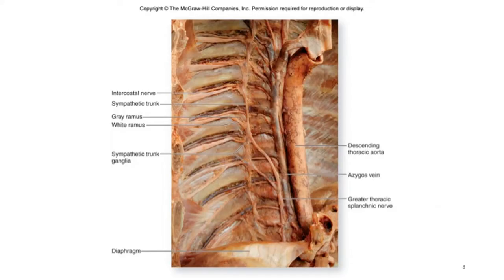This is a prosected specimen showing the thoracic sympathetic chain with its ganglia. You can see it running in front of the intercostal vessels and nerves. This is how the chain appears when the thorax contents are removed.